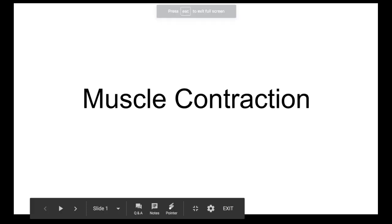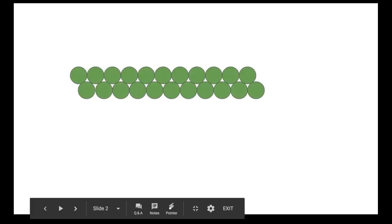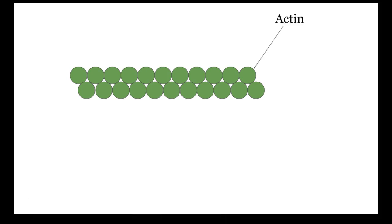Welcome to my video on muscle contraction. Here we have our actin — this is inside of our muscle, the smallest little sections of our muscle. They're called myofilaments.